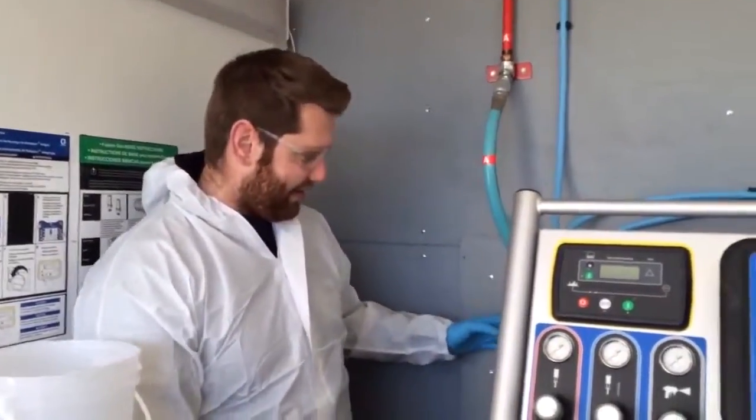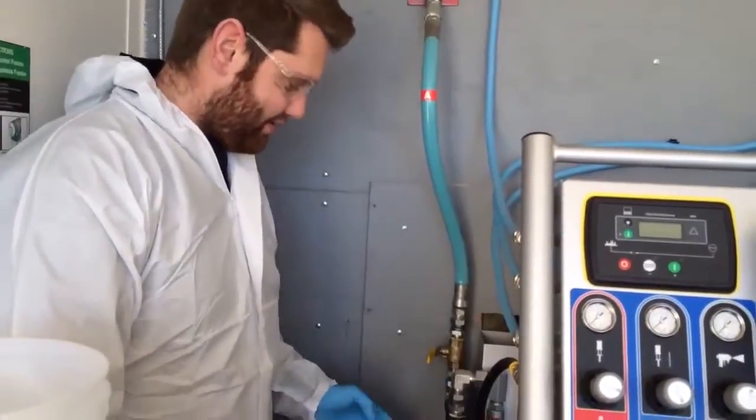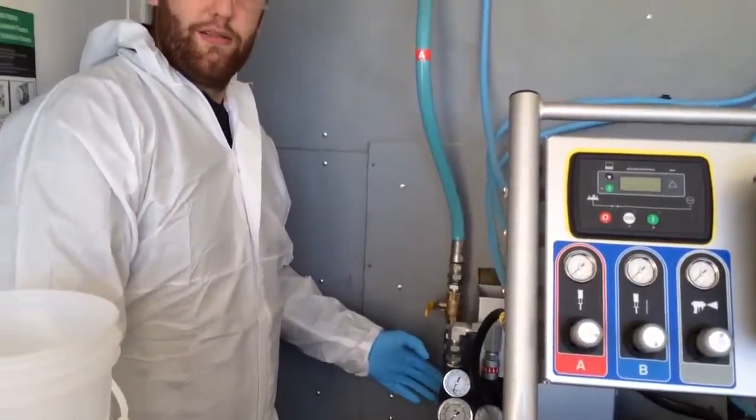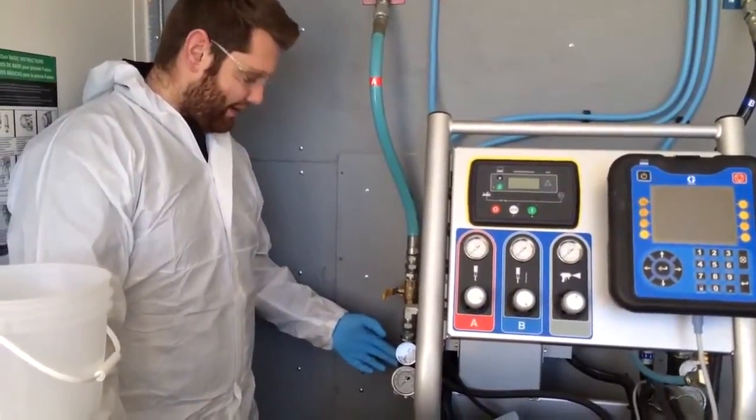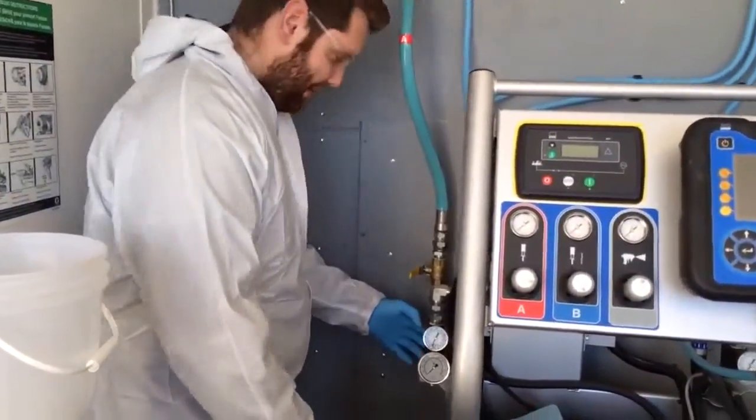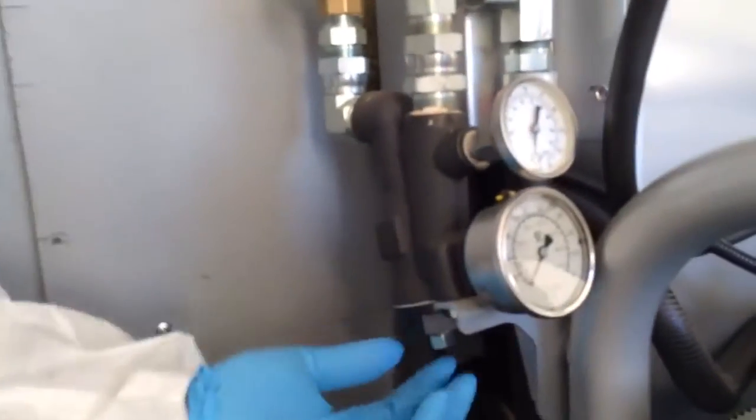First step is to turn the valve off on the back of the machine here. This valve cuts off flow to the Y strainer itself from your A-side transfer pump. The second step would be to come down here to the big nut on the bottom on the Y strainer housing right here. This is the Y strainer housing, big nut on the bottom.